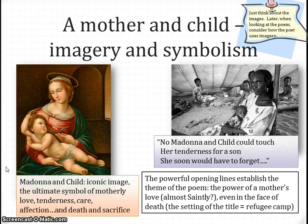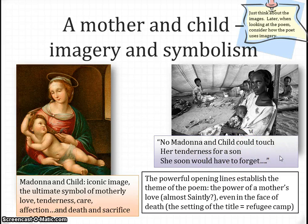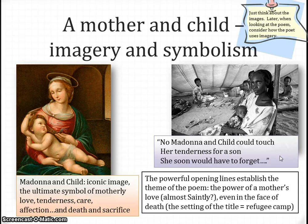However, you will recall that Jesus's mother watched him die. So it's also a symbol for death and sacrifice. Now if we think about the words in the poem — 'No mother and child can touch her tenderness for a son. She soon would have to forget.' These powerful opening lines establish the theme of the poem: the power of a mother's love. It's almost equating the mother's love to being saintly by referring to the Madonna and the child, even in the face of death, even in the setting of the refugee camp.